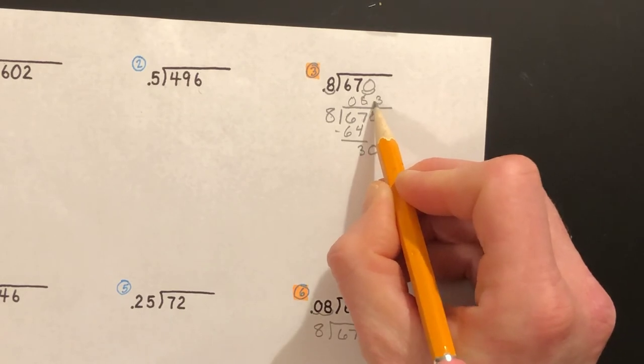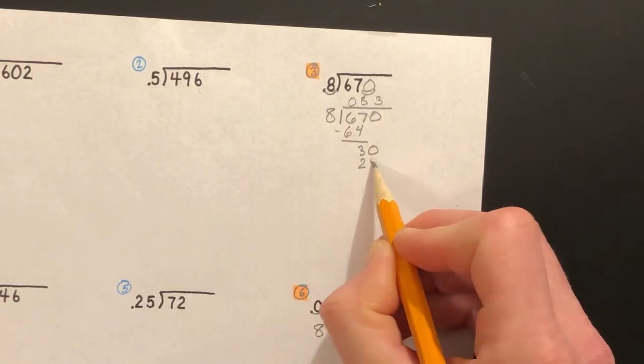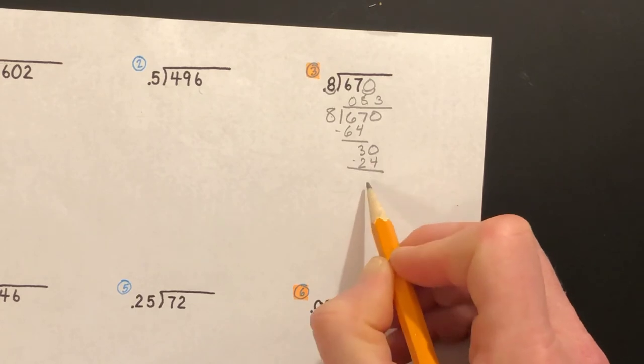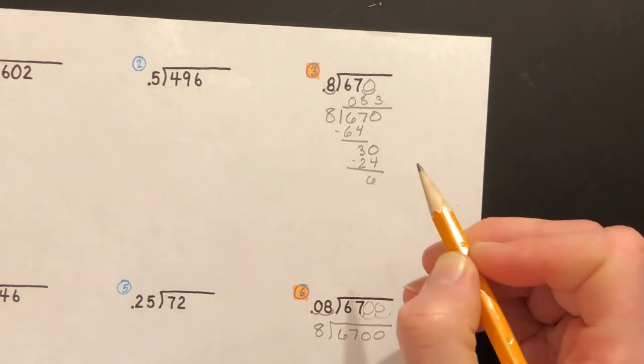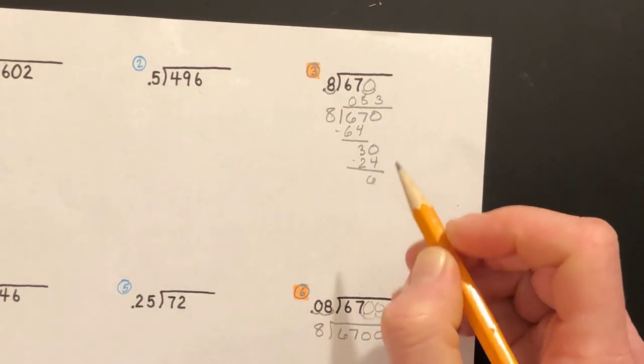Three times. Three times eight is 24. Then we get a remainder of six. We need to keep on going until we don't have any remainder.